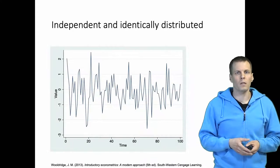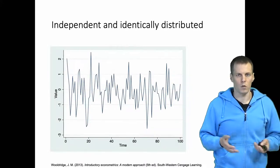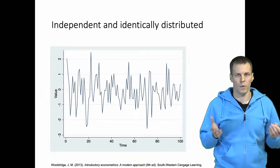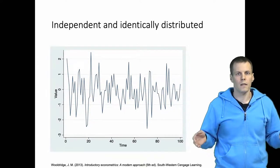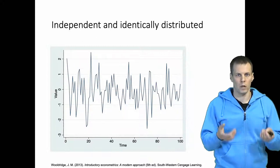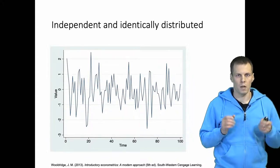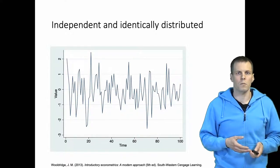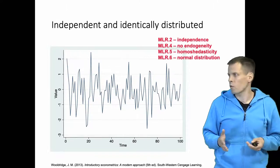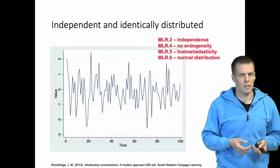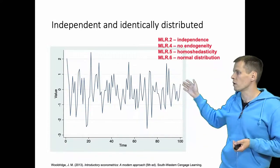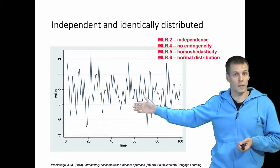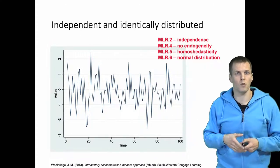Let's start by looking at what is normal, just random noise. In a regression analysis, if we have a pooled OLS regression — taking a longitudinal dataset, putting it all together, and running OLS while ignoring any time dimension or clustering — we need four assumptions about the error term: independence, no endogeneity, homoscedasticity, and normal distribution. This is just random noise from a normal distribution, which is what regression analysis assumes when applied to a longitudinal dataset.